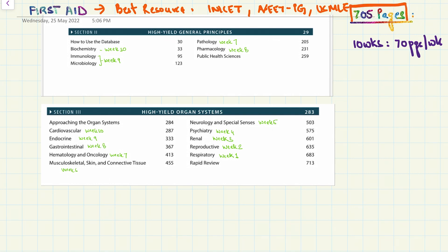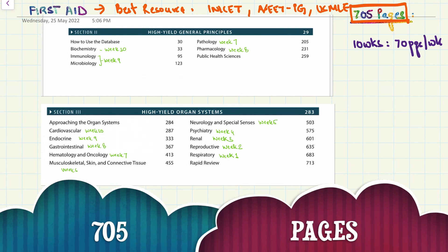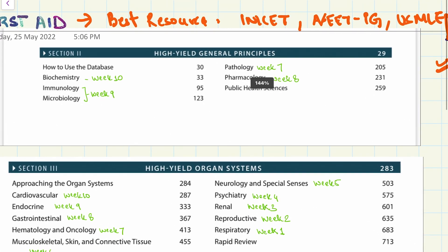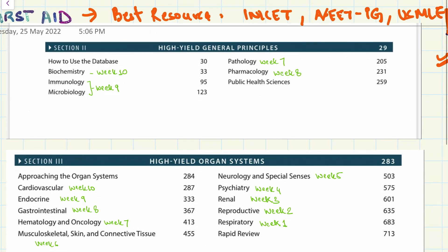There are 100 pages that we have to read. If you do around 70 pages a week, it will take just 10 weeks to complete the entire book. This is how I planned for the entire 10 weeks and how we go about studying them.